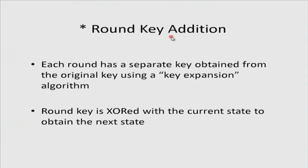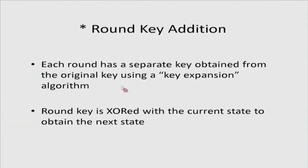The fourth step is round key addition. Each round has a separate key obtained from the original key using a key expansion algorithm. From the original 128-bit key, 10 different round keys are derived, one for each round. Each round key is also 128 bits, representable as a 4 by 4 matrix of bytes. You take the state matrix and XOR it element-by-element with the round key matrix — field addition in GF(2^8) is the XOR operation. This completes the four steps of each AES round.